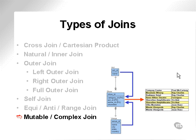A mutable join would be, for instance, as shown in the diagram, a join between three tables — act, show, and venue — passing out some data. The complex join would then apply filtering to that data and perhaps retrieve fewer of the rows from the original mutable join. There is a very slight difference between a mutable and a complex join.